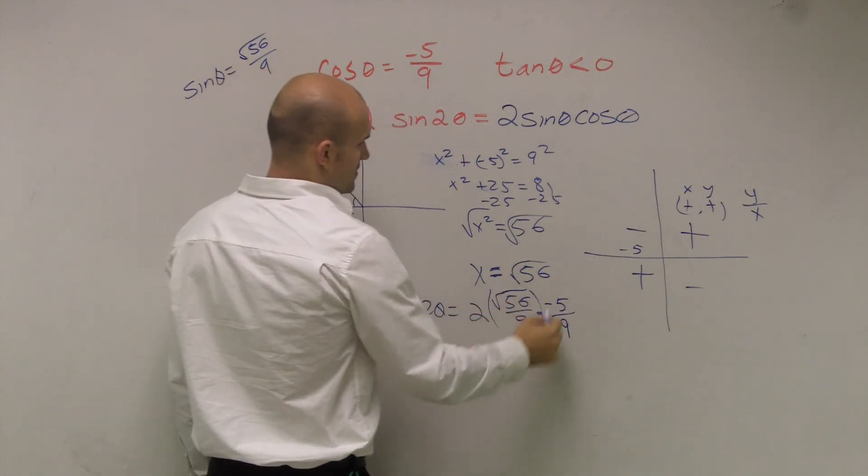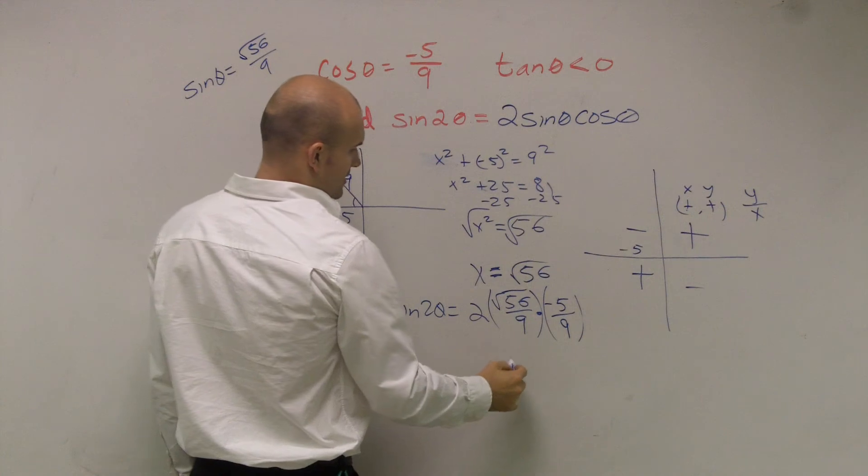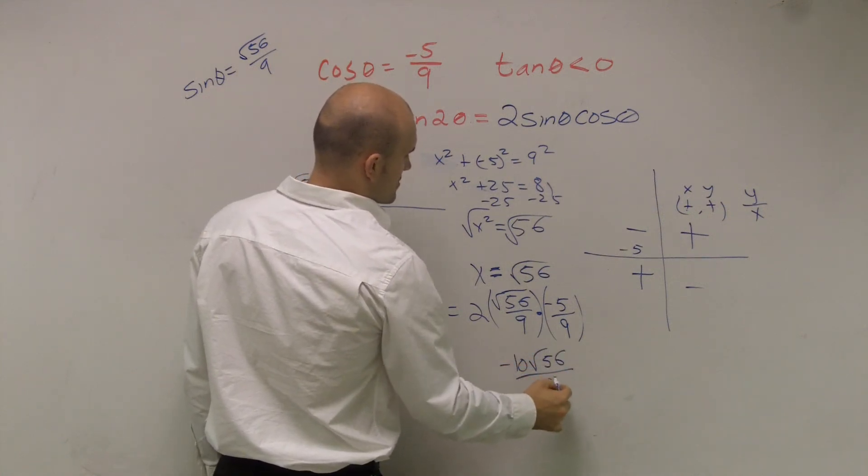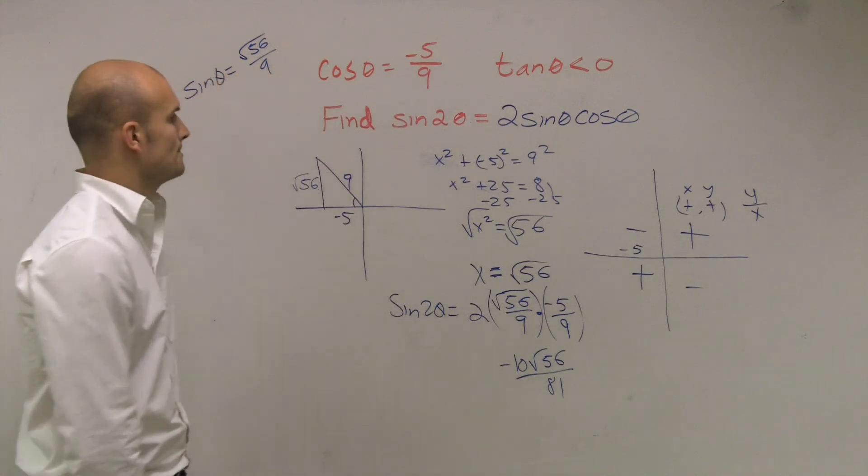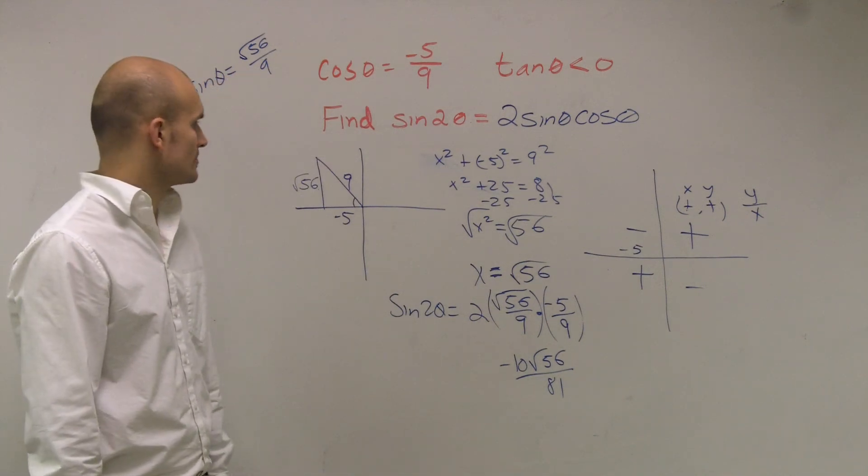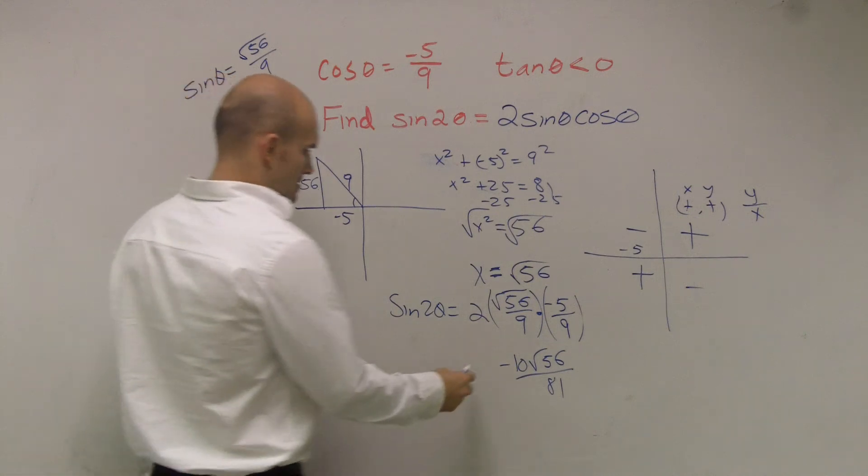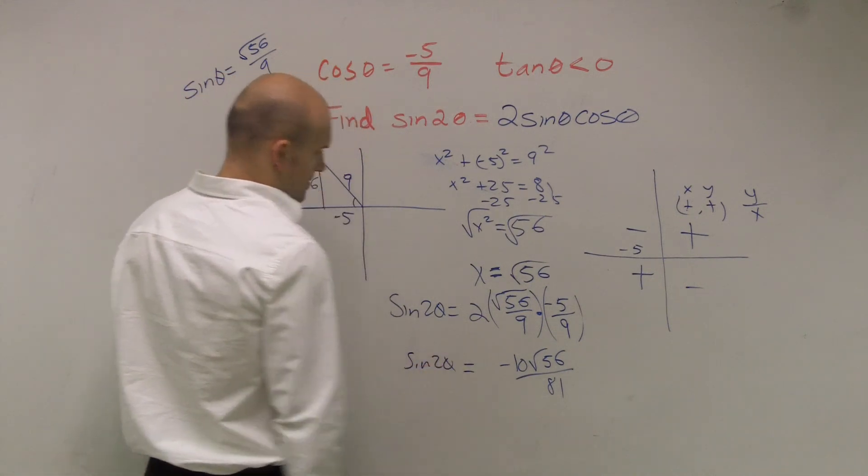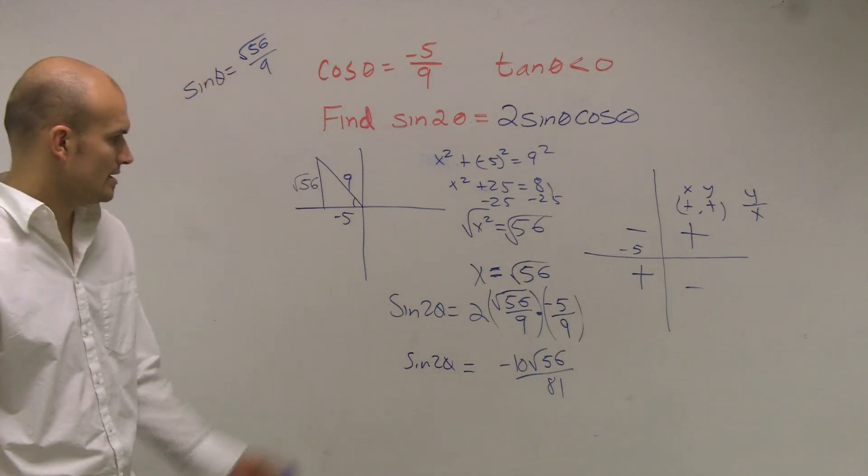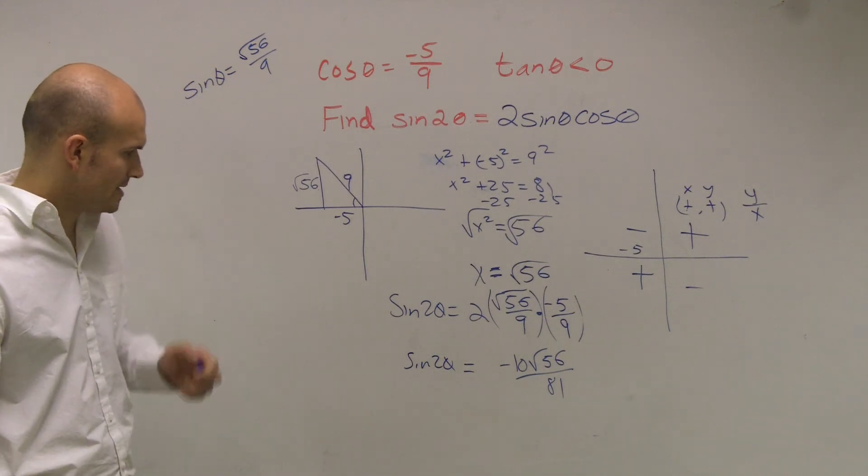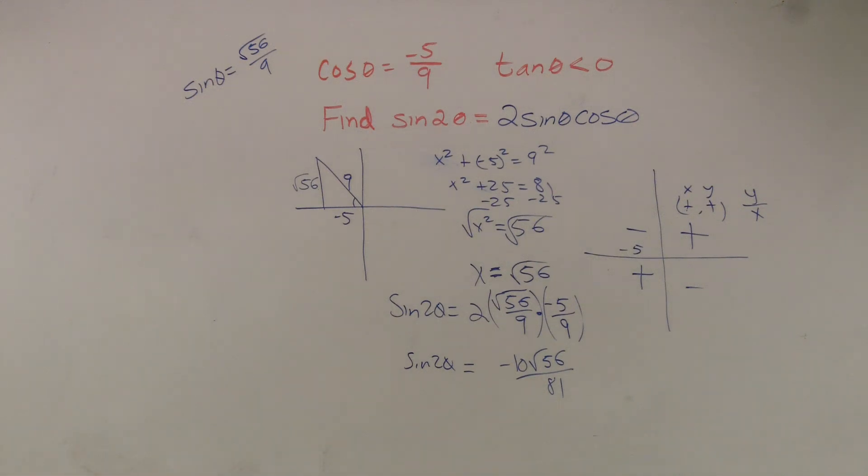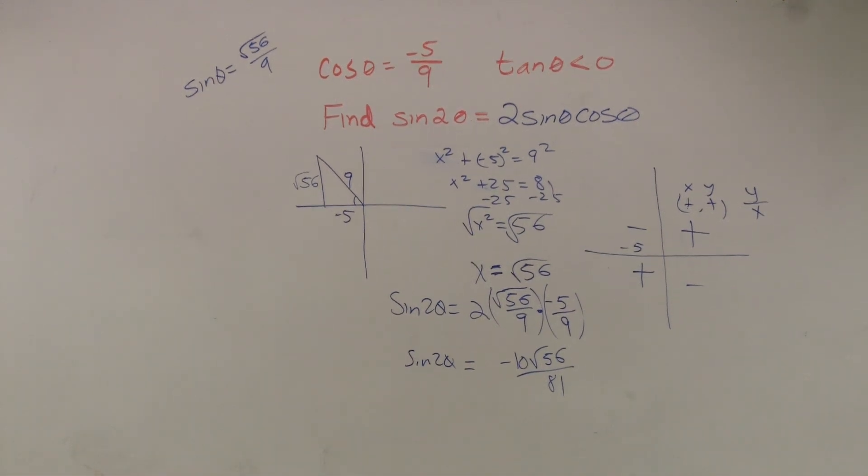And then all you do is just multiply. So we get negative 10, radical 56, over 81. Make sense? And then that's it. So sine of 2 theta equals negative 10 radical 56 over 81. And you see if you can reduce it. And you can't. Make sense? Yes. So remember.